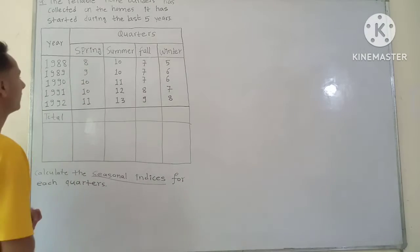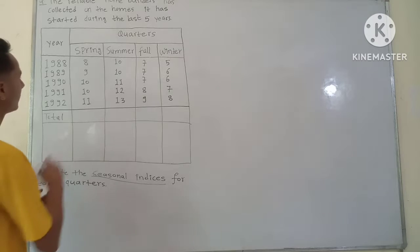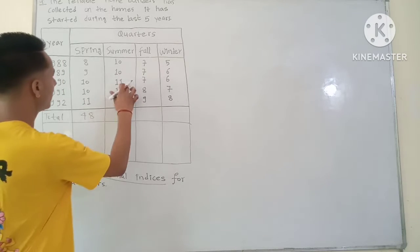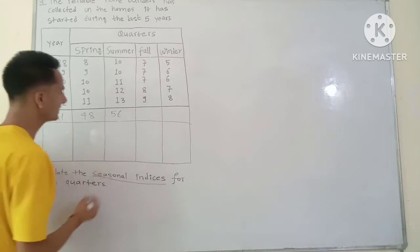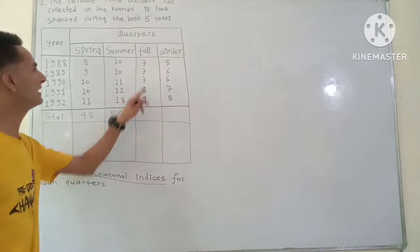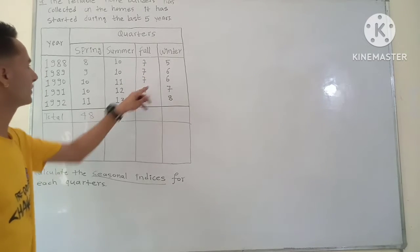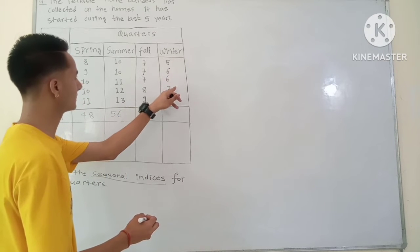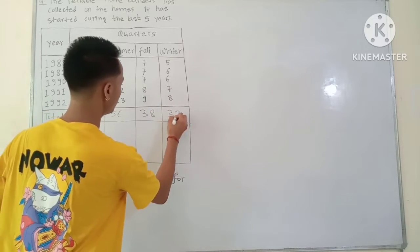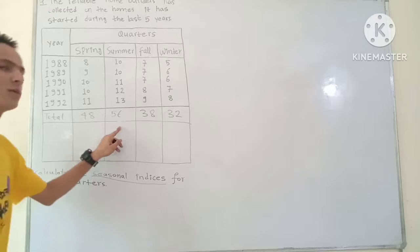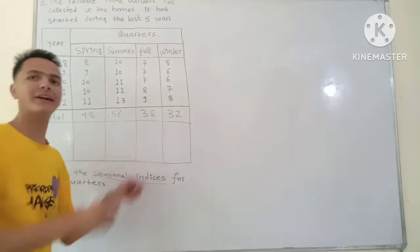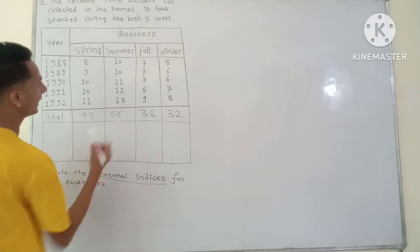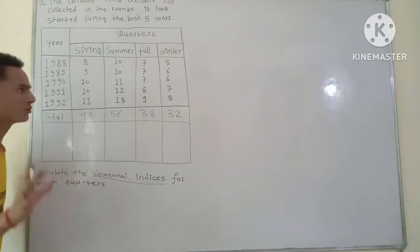After summing the same-quarter values across all five years: Spring total = 48, Summer total = 56, Fall total = 38, and Winter total = 32.